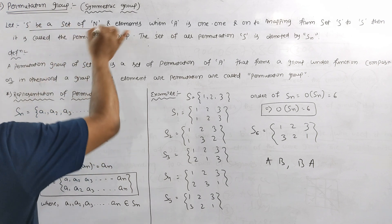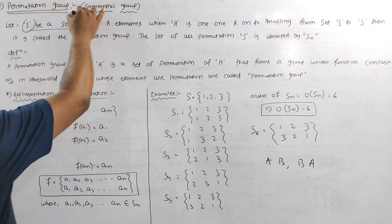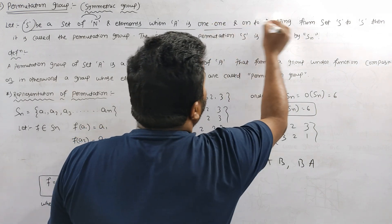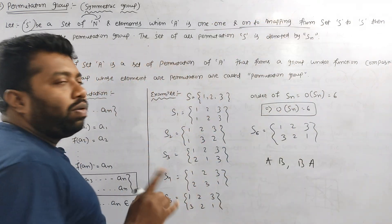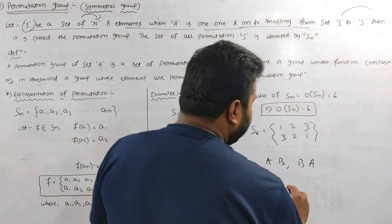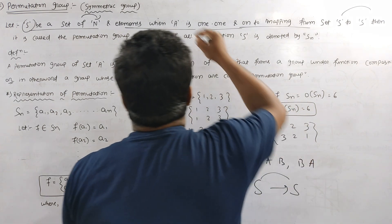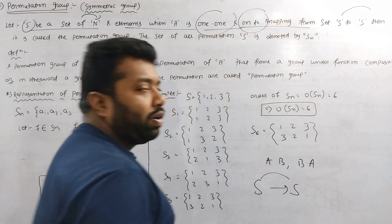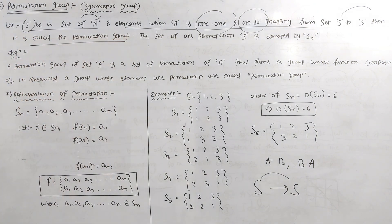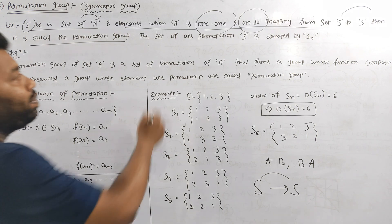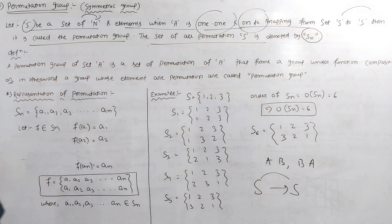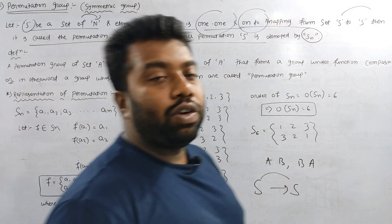Let S be a set and n, then S is a set of natural numbers and n is a set of natural numbers, and element a is a 1-to-1 and onto mapping. The set of all permutations is denoted by Sn.